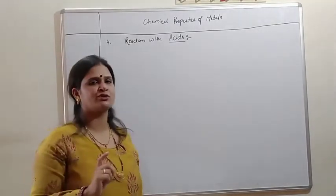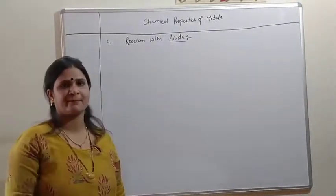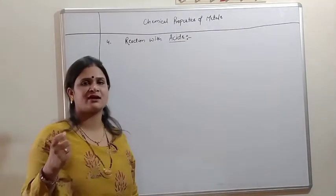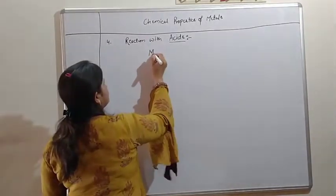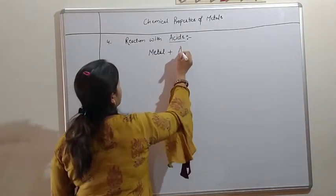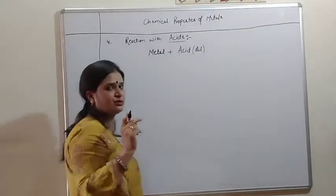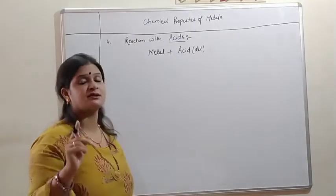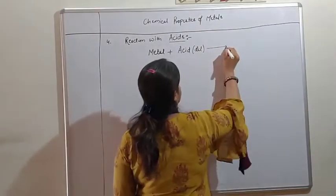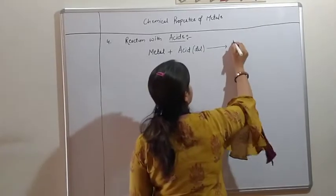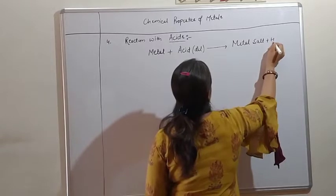Now we come to the fourth chemical property of the metal, that is reaction with acids. When metal reacts with acid, the acid is in dilute form because we dissolve the acid in water. They will release H+ ions and act like an acid. The reaction forms metal salt with the release of hydrogen gas.